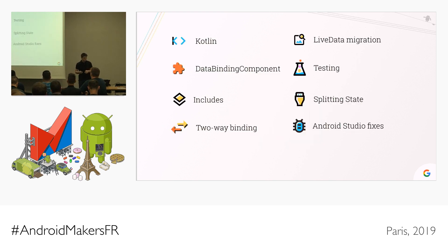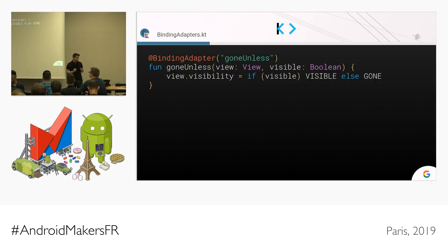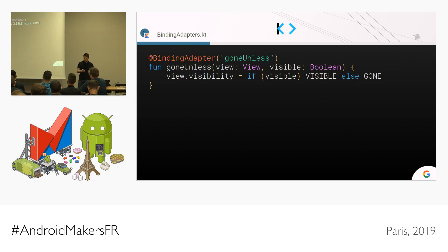I have a bunch of topics to talk about in no particular order. This is an advanced talk, but it doesn't mean that they are hard to implement or hard to understand. We're going to start with something super simple, which is how to define binding adapters in Kotlin. The most common way of doing this is defining a function at the top level of a Kotlin file. Data binding is going to look for static methods annotated with a binding adapter annotation. This is exactly what a top-level function generates.